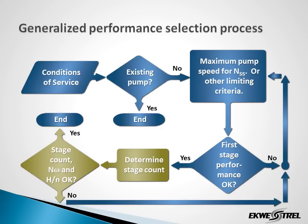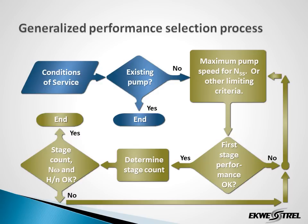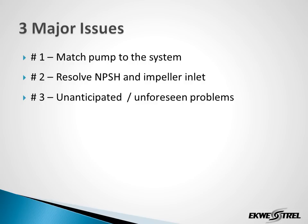Returning to the pump performance selection process, when the speed is selected and after checking the first stage performance, the stage count is resolved. There is actually a whole iterative process that happens involving the speed selection, determining the first stage performance, and resolving the stage count. To recap, we have the three major issues: matching the pump to the system in order to avoid oversizing the pump; resolving the NPSH and impeller inlet — which is also an oversizing problem if we provide too much margin, especially for the run-out flow, then we oversize the impeller inlet; and unanticipated and unforeseen problems.